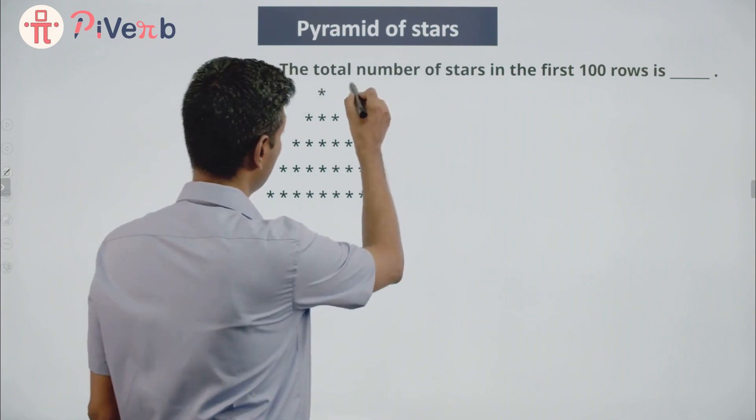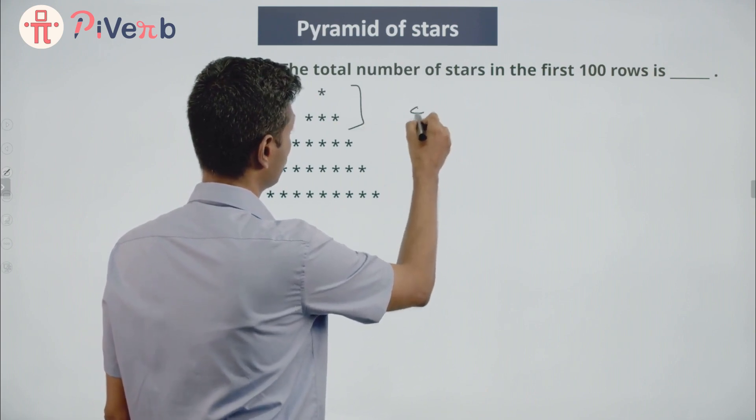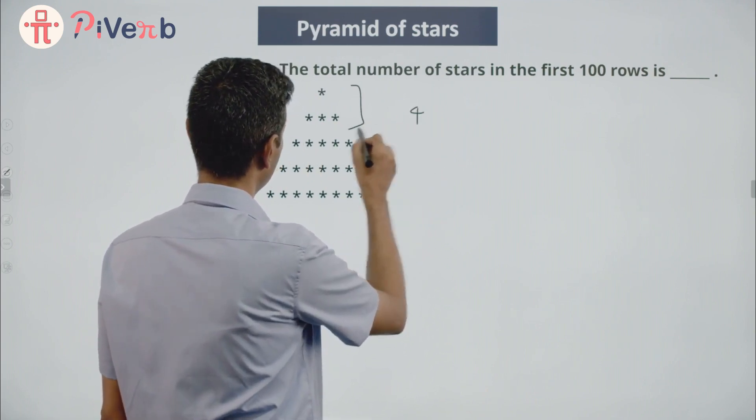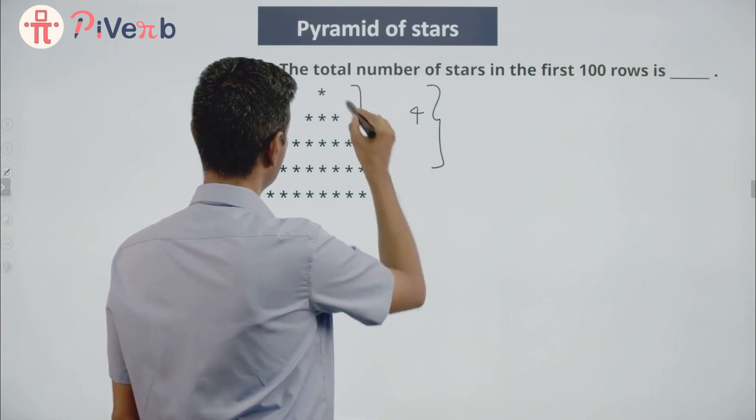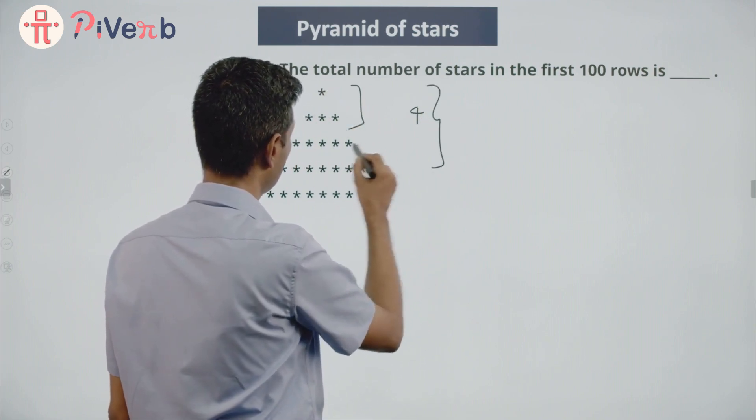First 1 row is 1, take 2 rows, you have 4 and you have 3 rows, 1 plus 3, 4 plus 5, 9.